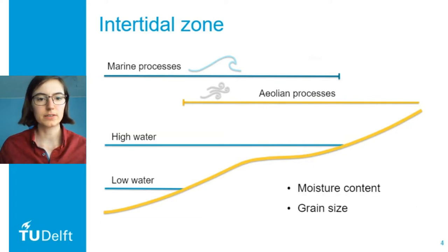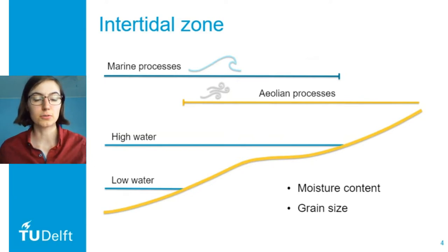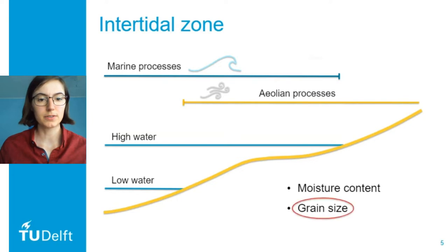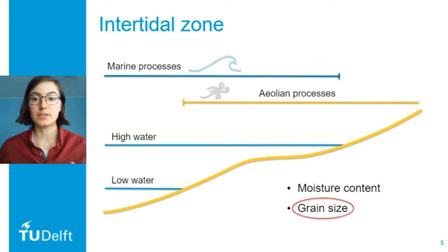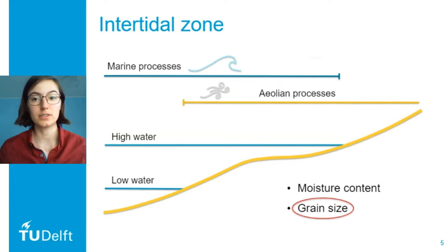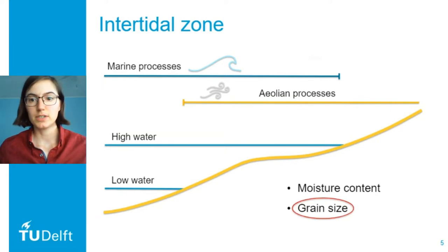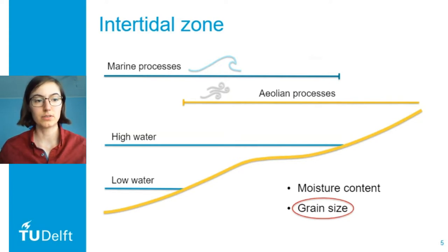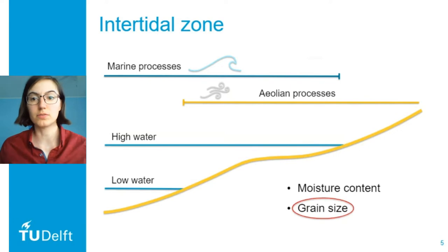There are several important factors that determine whether there's sediment transport from the intertidal zone onshore — for instance, moisture content and grain size. Today we're specifically focusing on grain size, because if there's aeolian sediment transport and there are only heavy coarse grains, there's less transport than when there are fine grains available that are lighter and easier to move by the wind. Research has also shown that the upper layer is very important for aeolian transport — the upper few millimeters determine whether grains are available.